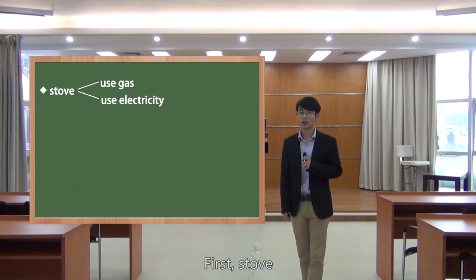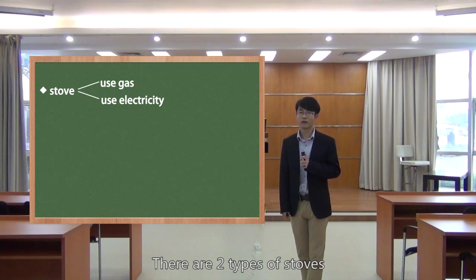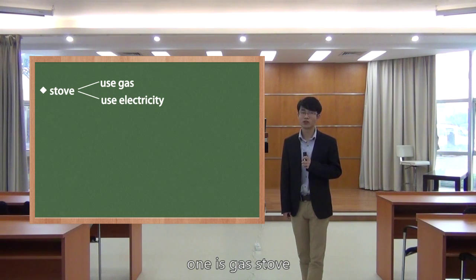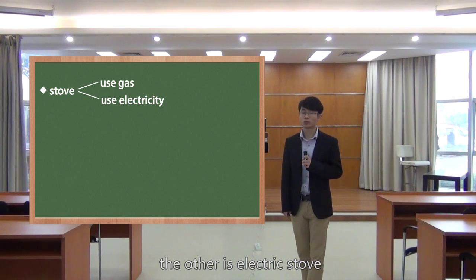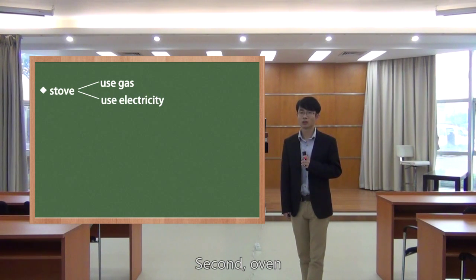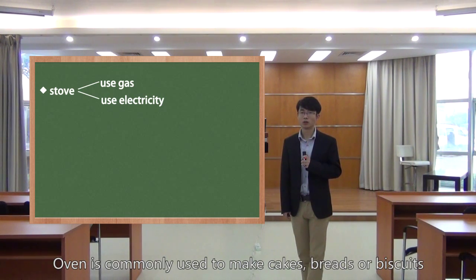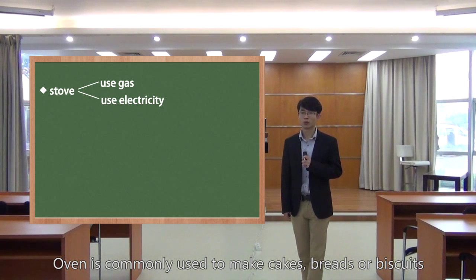First, stove. There are two types of stoves: one is gas stove, the other is electric stove. Second, oven. Oven is commonly used to make cakes, bread, and biscuits.